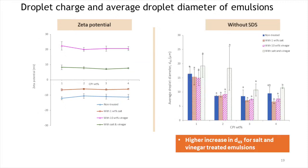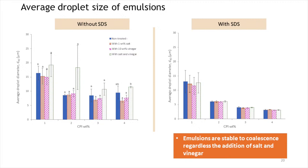The graph on the right shows the volume average droplet size as a function of canola protein percentage and different treatments. In general, with the addition of both salt and vinegar, the D4,3 was higher compared to either vinegar- or salt-only emulsions. With the addition of SDS, the volume average of salt and vinegar-treated emulsions significantly decreased, while no significant difference was observed for non-treated versus other individual treatments. This confirms that the larger droplet size in the presence of salt and vinegar was due to droplet aggregation, while droplets remained essentially stable to coalescence.